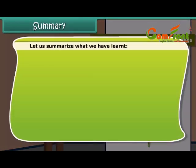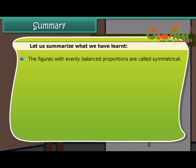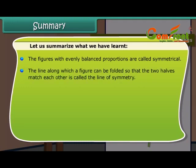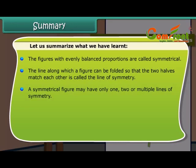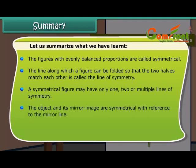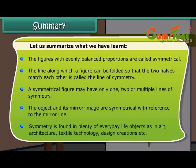Let us summarize what we have learned. Figures with evenly balanced proportions are called symmetrical. The line along which a figure can be folded so that the two halves match each other is called the line of symmetry. A symmetrical figure may have only one, two, or multiple lines of symmetry. The object and its mirror image are symmetrical with reference to the mirror line. Symmetry is found in plenty of everyday life objects, as in art, architecture, textile technology, design creations, and more.